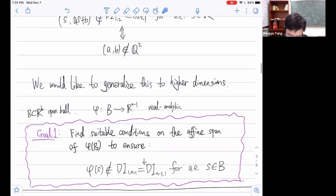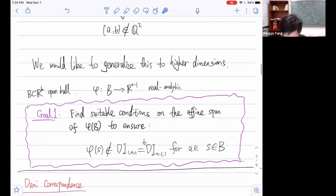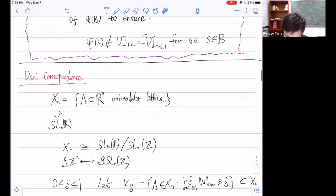We would like to generalize this to higher dimensions. That's the main topic of today's talk. Let B be the open ball in some Euclidean space, and φ be a real analytic map from B to R^{n-1}. Our first goal is to find suitable conditions on the affine span of the image of B, this analytic submanifold of R^{n-1}, to ensure the following: for almost every point on this submanifold, the vector is non-improvable.